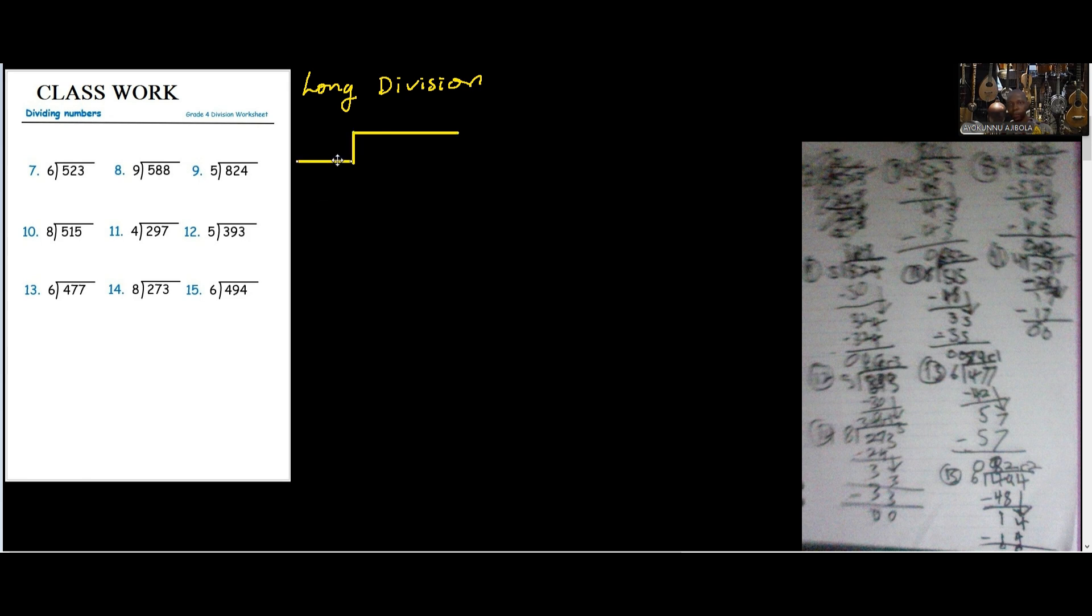Is that clear? Yeah. So, for number one, number seven, because we've done this before. So, we have 523 divided by 6. Okay, 6 can't go in 5. So, 6 and 52 is... How many 6 can you say in 52? That should be... 6 times 8 is 48, okay? Yeah.